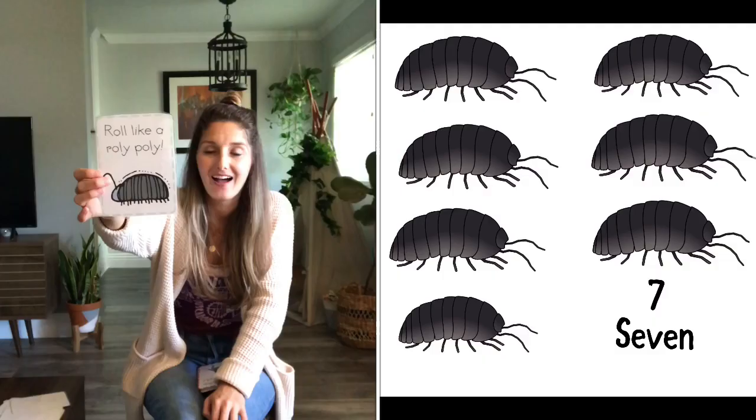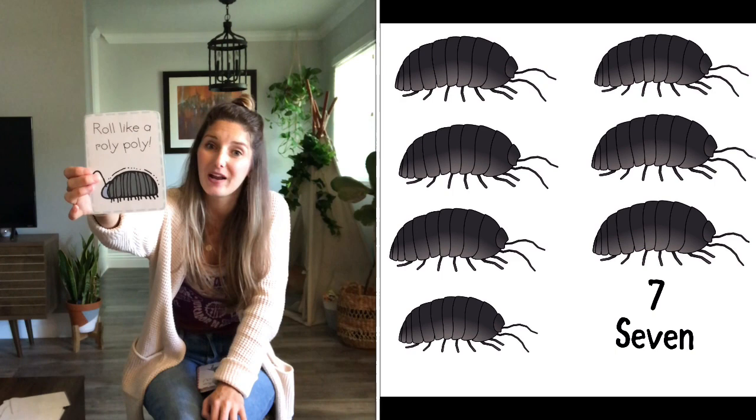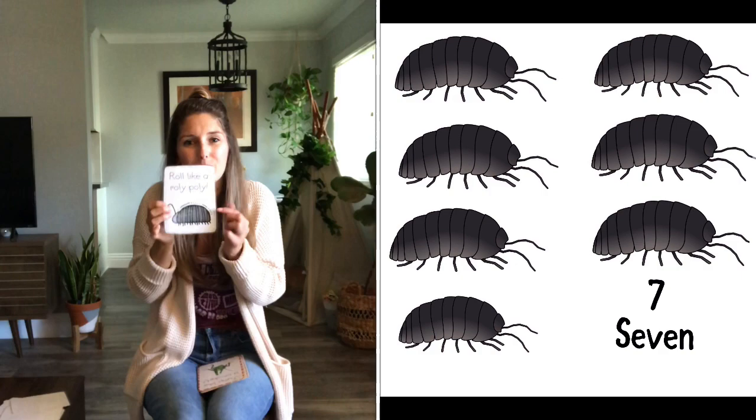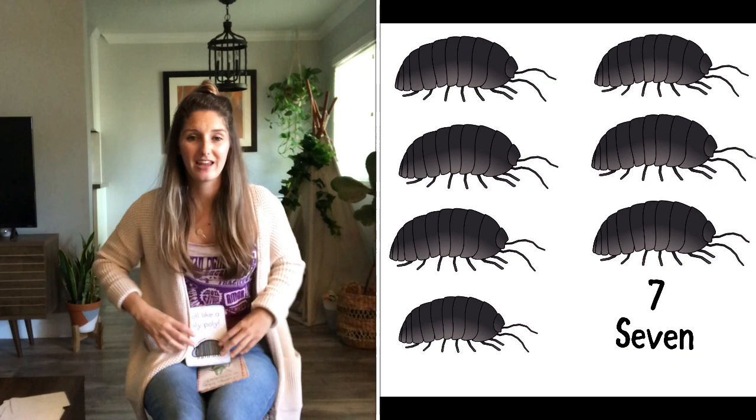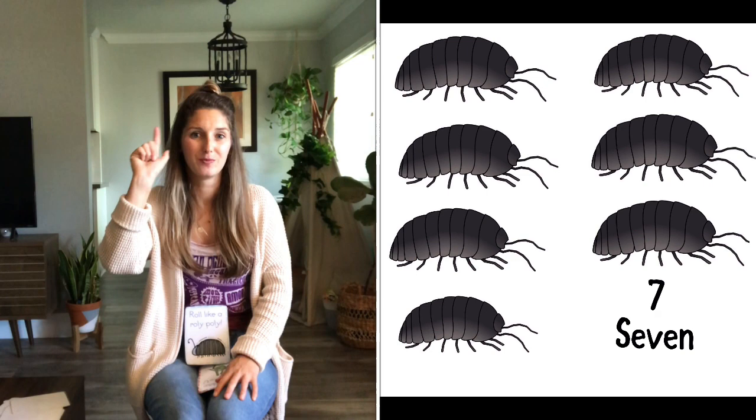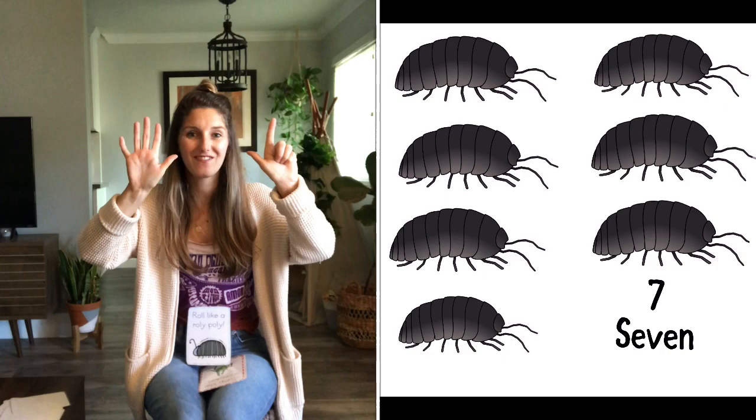Next we have a roly-poly. I love roly-polies. I see them when I go outside when I take a walk. Have you ever seen a roly-poly before? Good, they get really small and they roll like in a ball. They roll like this. How many roly-polies are there friends? Let's count. One, two, three, four, five, six, seven.